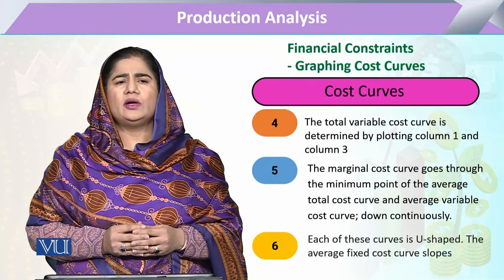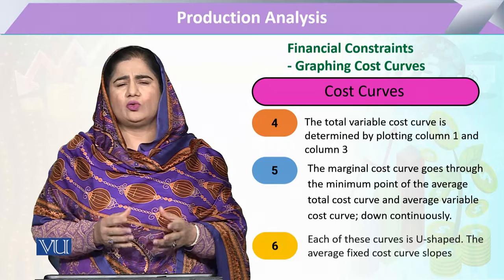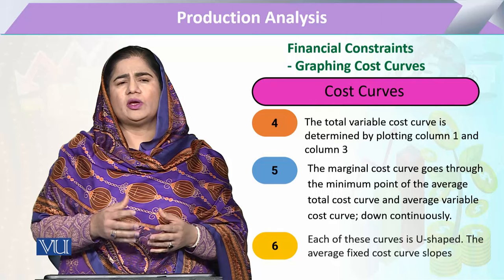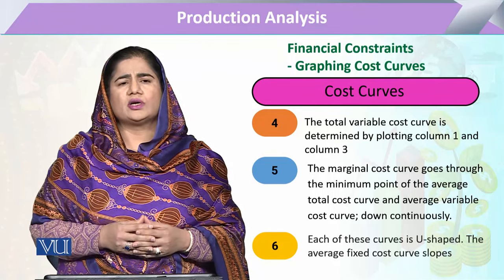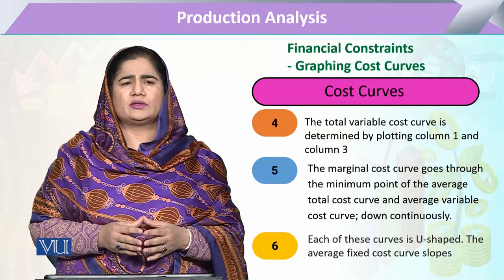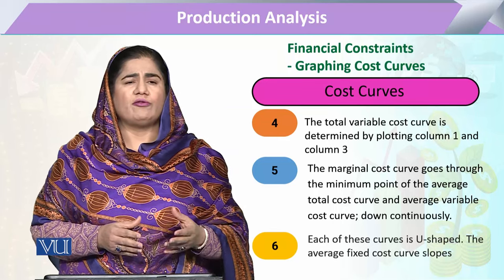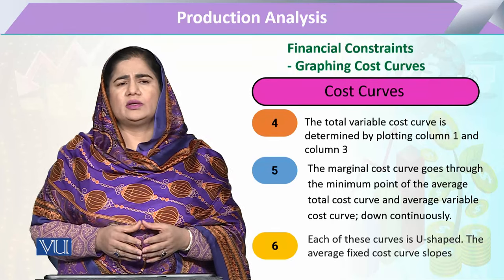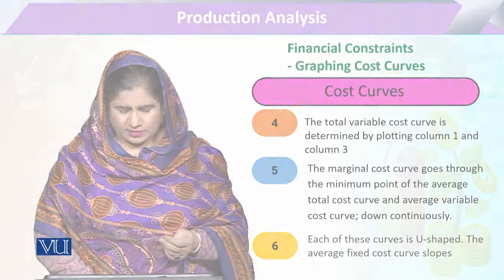When we draw the marginal cost curve, we see that marginal cost is basically the change in the total cost for one unit change in output. Keeping this in view, we draw the marginal cost curve on our graph. We see that various points of the marginal cost curve also coincide with the average cost curve, and these are the main points that provide significant information to support decision-making.